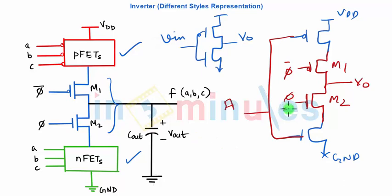When phi equals 0, phi bar equals 1, and hence this transistor is off and this transistor is off. So the output will be somewhere floating, or it's called high impedance. We'll discuss this in future clips, right now it's not required.